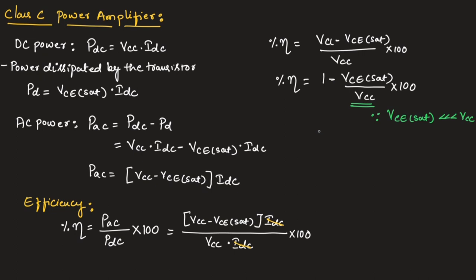That is why we can say the percentage efficiency will be greater than 90%. The efficiency will be greater than 90% in case of Class C power amplifier.